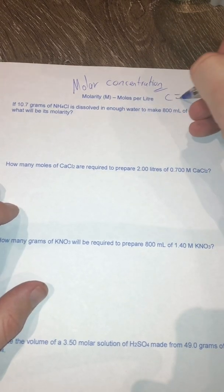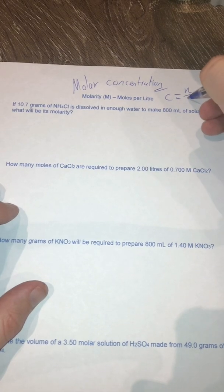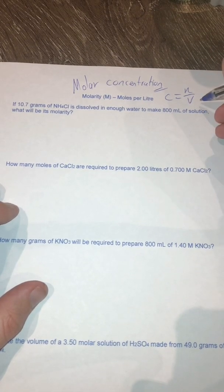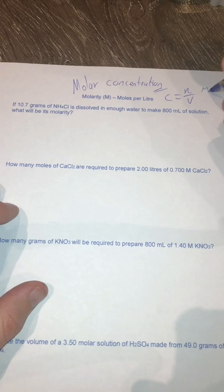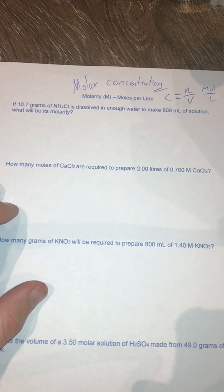So that means your concentration is going to be equal to your number of moles that you have divided by your volume, which is going to be in liters, because it's in moles per liter. That's where your concentration formula comes from. So C equals N over V.